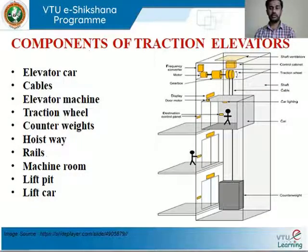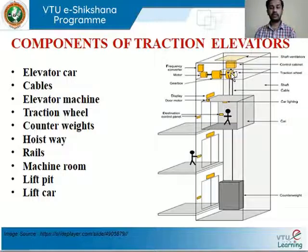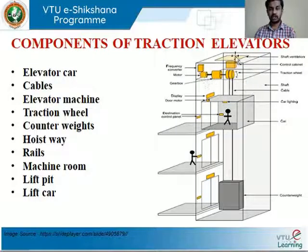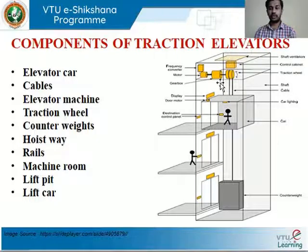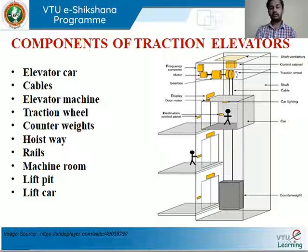The components of a traction elevator include: the elevator car, the cable (shown as a black line in the diagram), the elevator machine kept above with traction wheels — which function like a pulley — counterweights positioned beside the lift car, the hoist way, guide rails, machine room, lift pit, and the lift car.